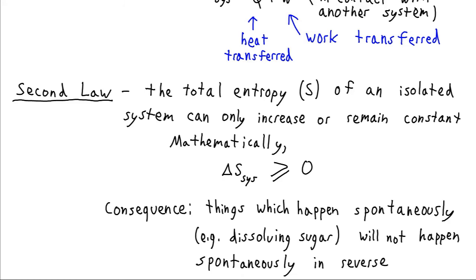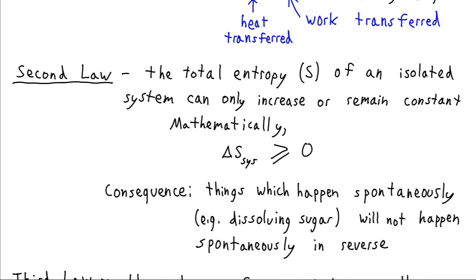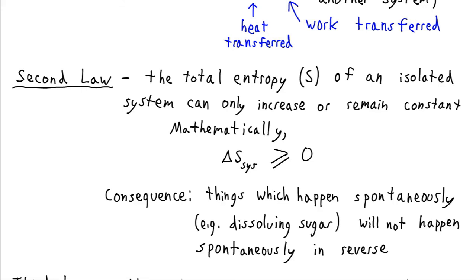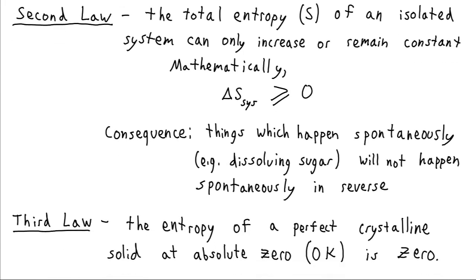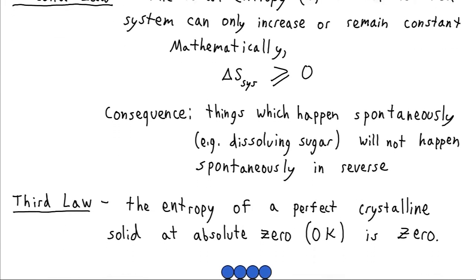Anything like that will not happen spontaneously in reverse. The sugar crystals will not reform after you've dissolved the sugar, and that's important in another way. It gives a directionality to how we experience time. There's a preferential way that things develop. That's because we occupy a very low entropy universe. If we occupied a high entropy universe, then time could go the other direction.